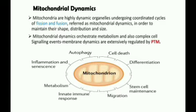Mitochondria can be found as isolated organelles or joined to form large networks. They can also be distributed non-uniformly in the cytosol to meet local energy demands of the cell. This changeable and adaptable nature of mitochondria, involving their morphology and subcellular distribution, is collectively known as mitochondrial dynamics.